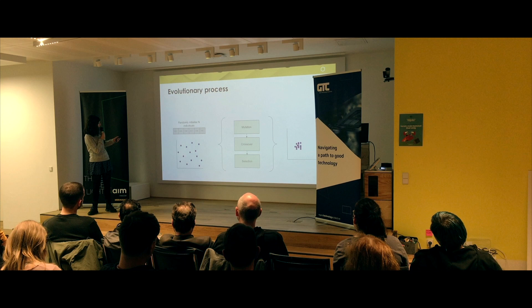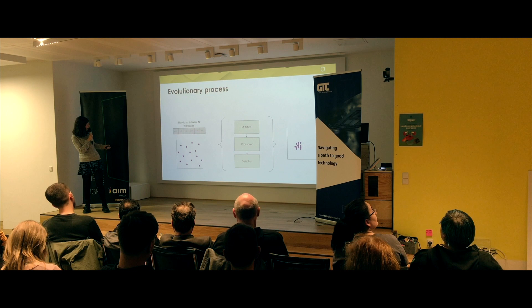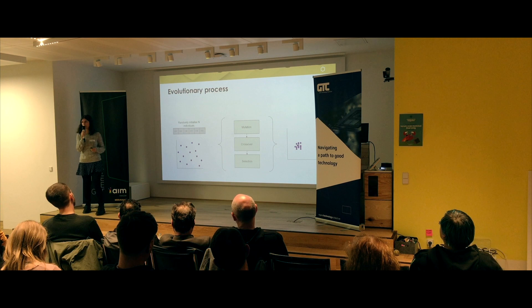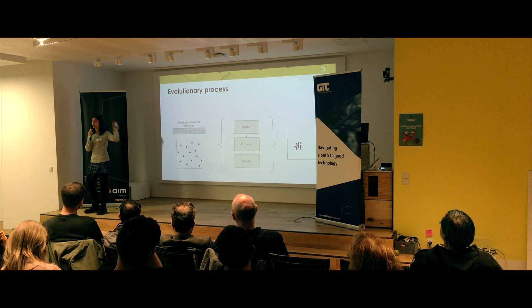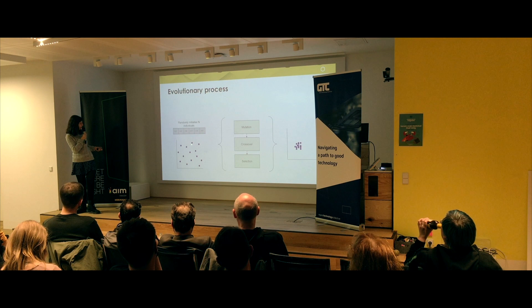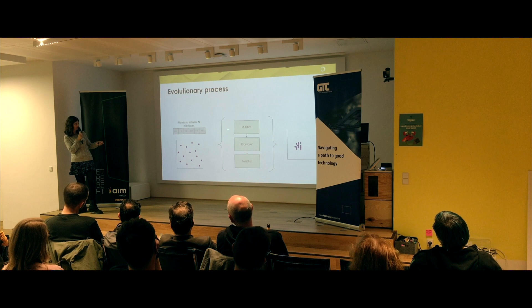Once we know how to do that, we can apply the evolutionary process to this. Pretend that this is actually a two-dimensional vector here. If this represents our problem — two values in a two-dimensional setting — we can plot what we call a population. A population, like in humans or cats, is our genetic diversity. We initialize a set of individuals randomly across the solution space. Once we have this population, that gives us nice genetic diversity, and we apply the evolutionary process to it: mutation, crossover, selection.